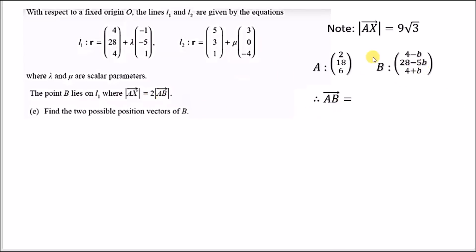To find AB, we subtract these two, so we do B take away A. This gives us 4 minus beta take away 2, which is 2 minus beta. 28 minus 5 beta take away 18 gives us 10 minus 5 beta. And 4 plus beta take away 6 gives us negative 2 plus beta.